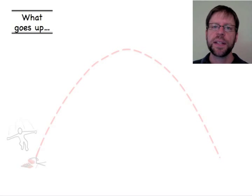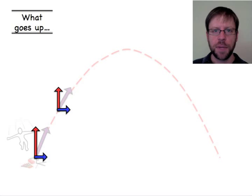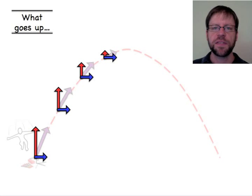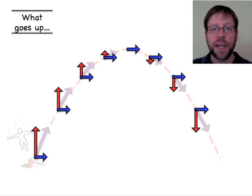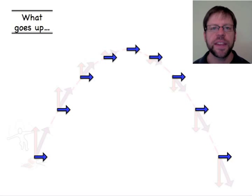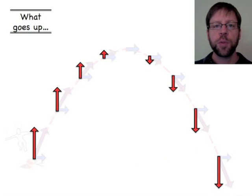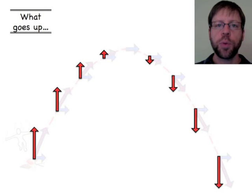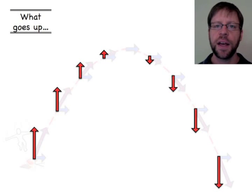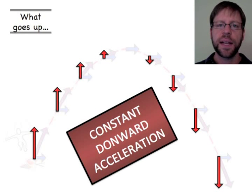We'll rearrange so the component vectors all originate from the same point. Looking at only the horizontal vectors, they are identical — same direction, same magnitude — which is exactly what you'd expect with zero acceleration in the horizontal direction. Looking at only the red vertical vectors, they start with a large upward magnitude that decreases until the highest point, where the magnitude reaches zero, then the vector flips downward and picks up speed — all due to our constant downward acceleration.